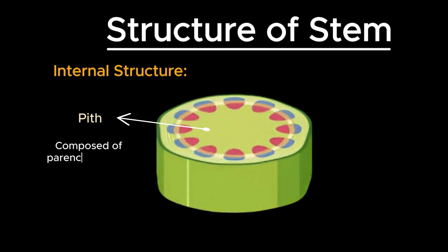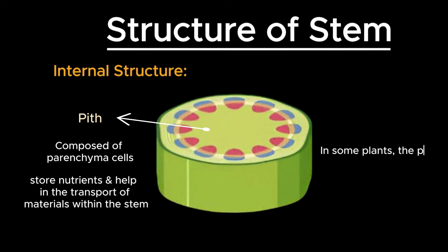At the center of the stem is the pith, composed of parenchyma cells that often store nutrients and help in the transport of materials within the stem. In some plants, the pith can become hollow as the plant matures.